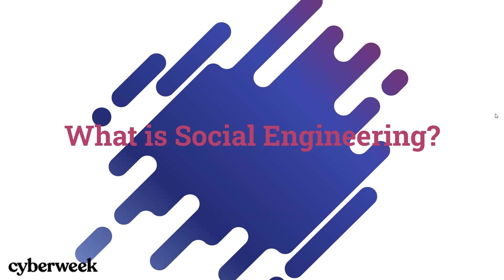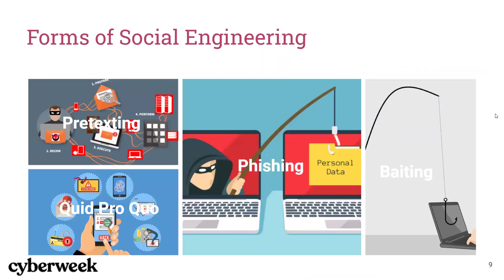In other words, actions that people take that make you reveal information or download harmful malware to your computer. Some forms of social engineering include phishing — a type of social engineering in which people can send you an email to gain personal information and pretend to be you.